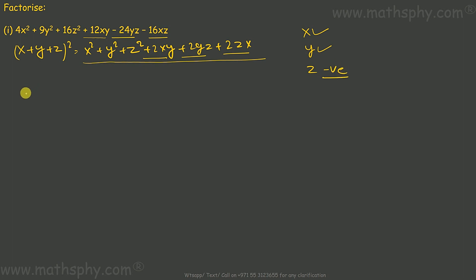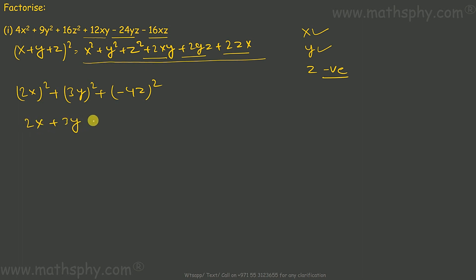4x² can be written as (2x)², 9y² can be written as (3y)², and 16z² can be written as (-4z)² since I have taken z as negative. So this rewrites as (2x + 3y - 4z)², which gives 4x² + 9y² + 16z², since (-4z)² gives +16z².